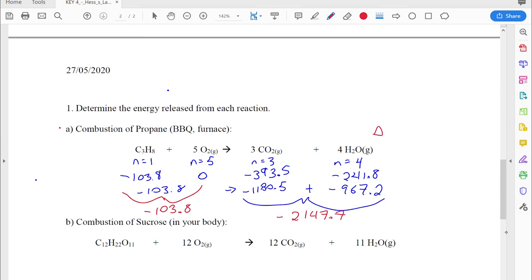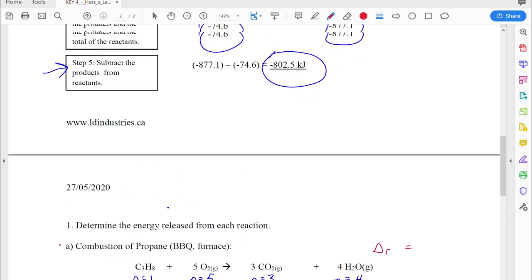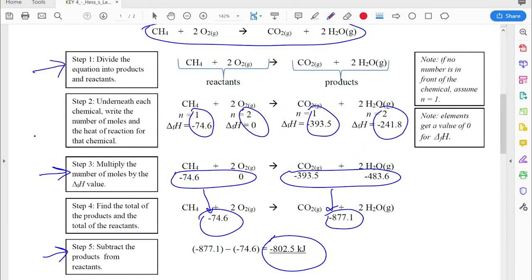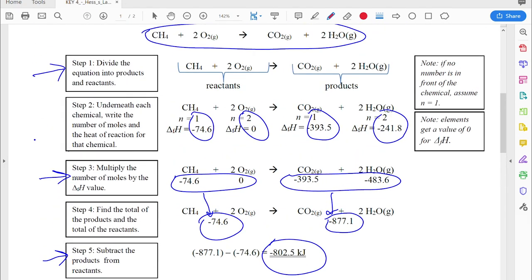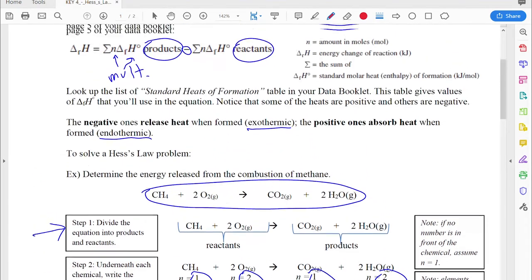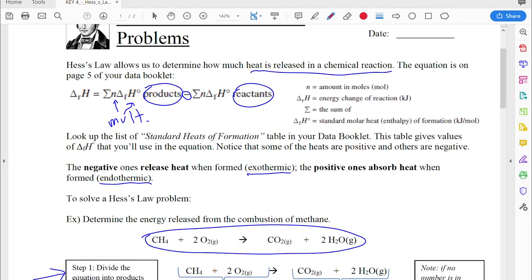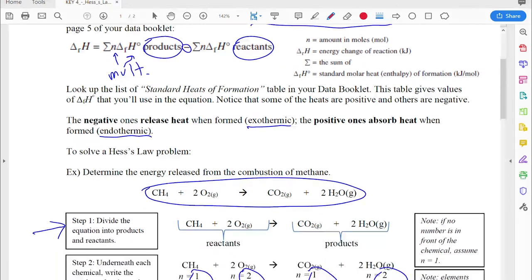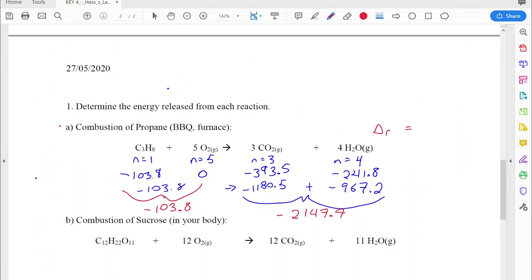Now to finish it all off, my total energy is going to be my products minus my reactants. Just like the formula is telling us to do up here, the delta Rh is products total minus reactants total. So my products total was negative 2147.7 minus my reactants, negative 103.8. Let's work it out.